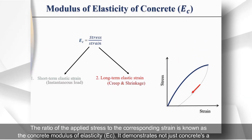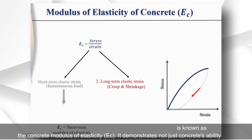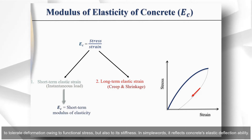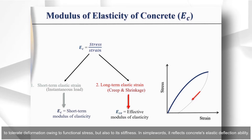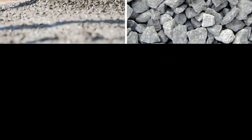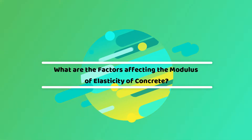The ratio of the applied stress to the corresponding strain is known as the concrete modulus of elasticity. It demonstrates not just concrete's ability to tolerate deformation owing to functional stress, but also its stiffness. In simple words, it reflects concrete's elastic deflection ability. The modulus of elasticity of concrete is affected by aggregate and mixture quantities.